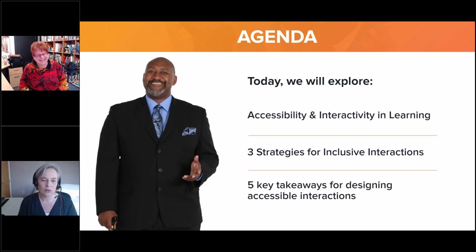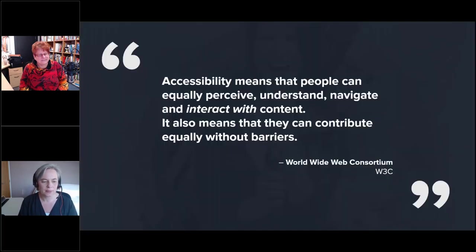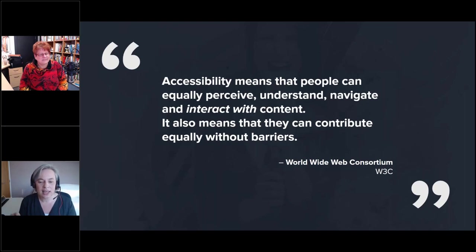We're going to start by focusing on definitions — what we actually mean by accessibility and interactivity in learning. Accessibility means that people can equally perceive, understand, navigate, and interact with content, and that they can contribute equally without barriers. This explanation is based on a definition from the World Wide Web Consortium, or W3C, and it's one of the best definitions I've found because it focuses on the idea of an equal experience for everyone — and importantly, it includes interacting with content.